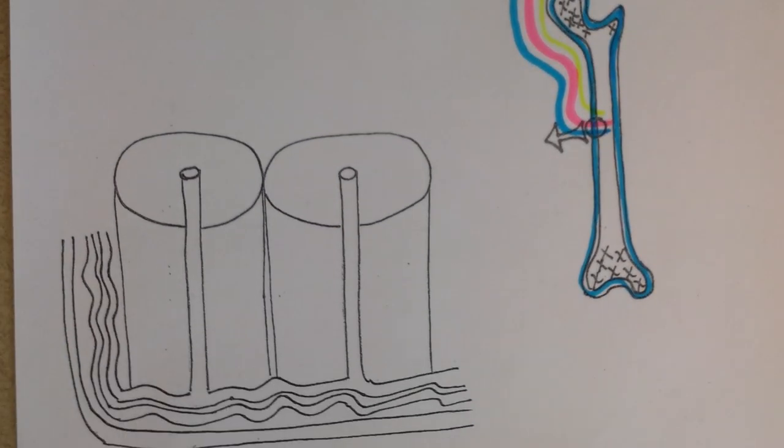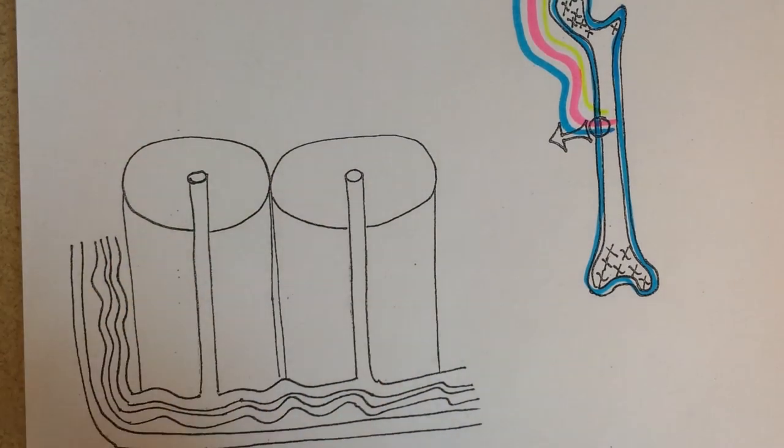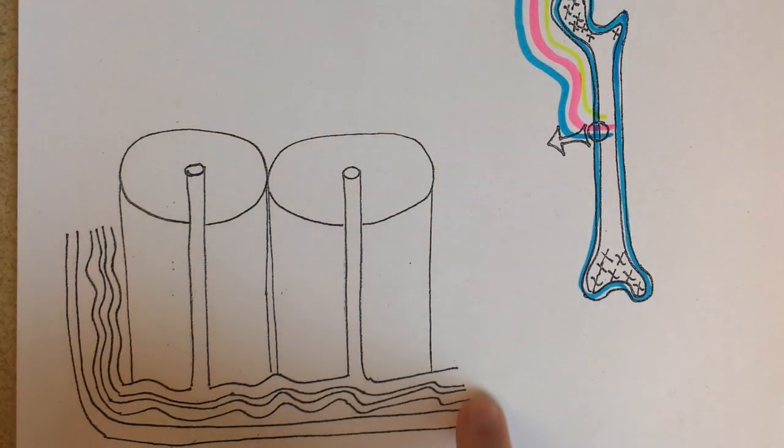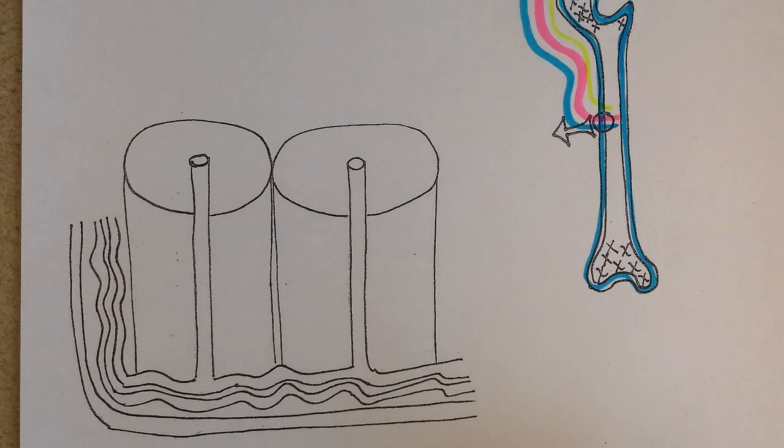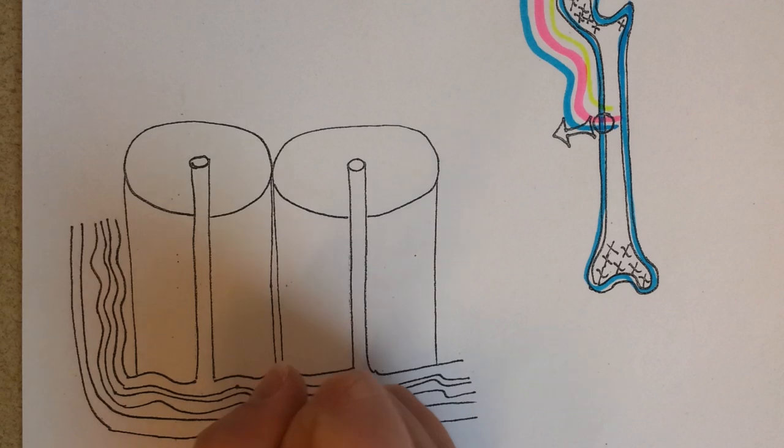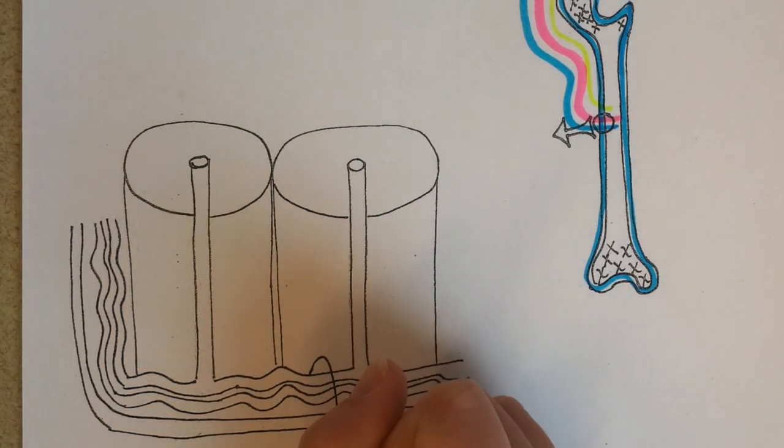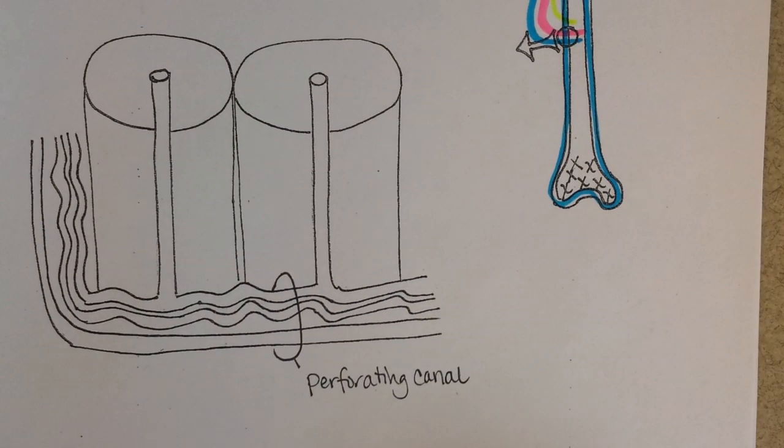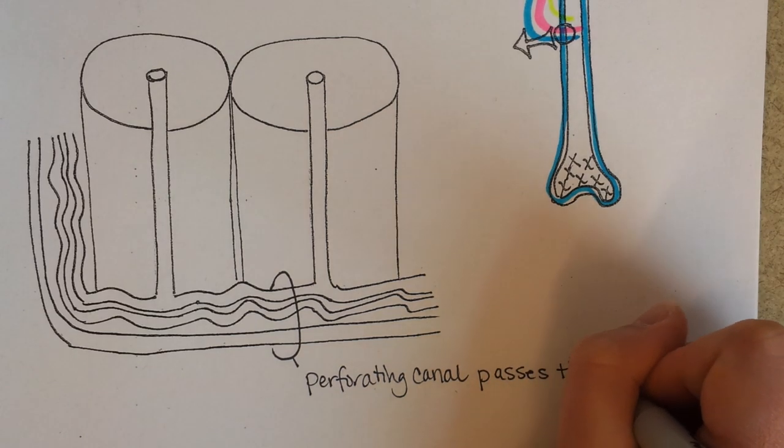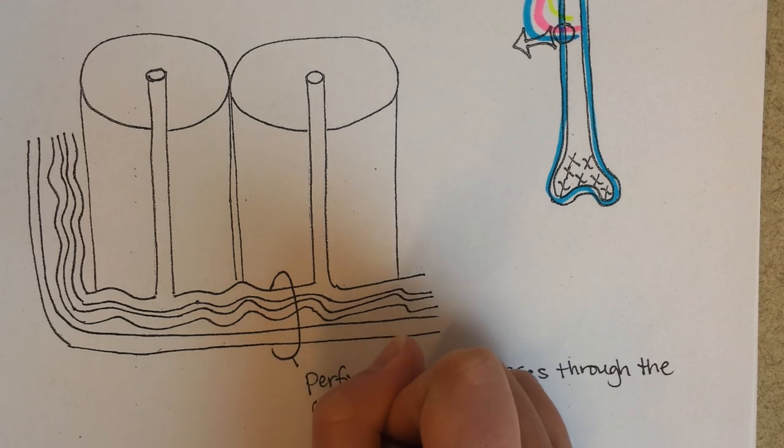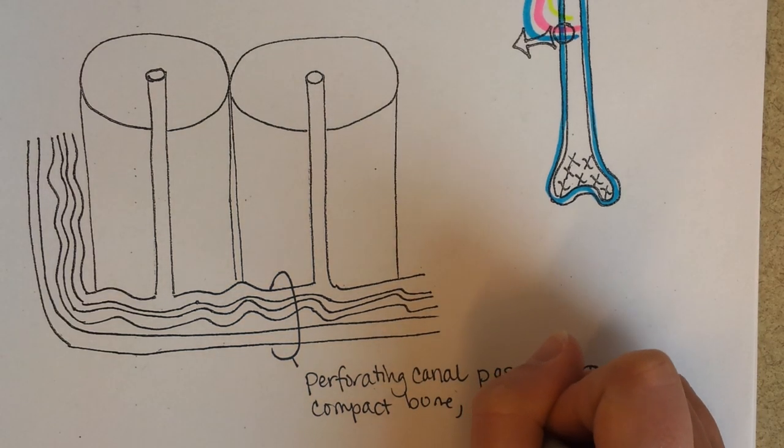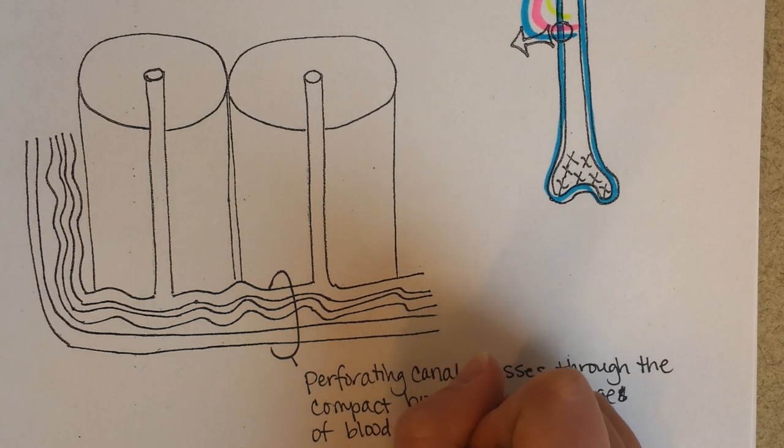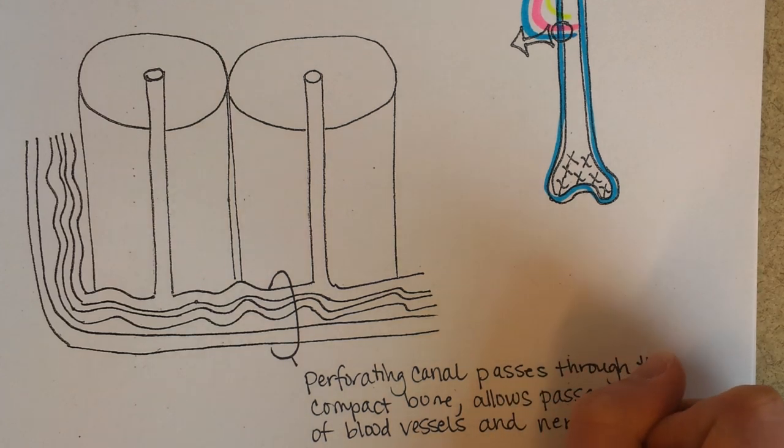And then over here you can see that this would be a couple of osteons. So here's an osteon, here's an osteon. There might be numerous osteons that make up the thickness of the compact bone, but this would represent the outside of the bone, and then over here this would be the bone marrow. So going through the compact bones are what are called perforating canals, and that would be kind of all of this. So a perforating canal passes through.